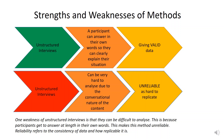I want you to look carefully at the way these points are strung together. We need all three elements — what something is, a feature of it, and its key term — because you need to be able to write something like this in your paragraphs: 'One weakness of unstructured interviews is that they can be very difficult to analyze. This is because participants get to answer at length in their own words. This makes the method unreliable. Reliability refers to the consistency of data and how replicable it is.' You've got quite a lot of work to do now on your strengths and weaknesses.